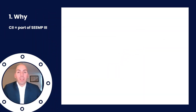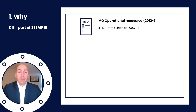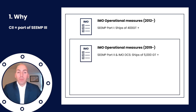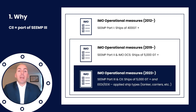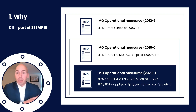CII itself is part of the Ship Energy Efficiency Management Plan number 3. We started with number 1 in 2012, number 2 in 2019, and the latest update from 2023 onwards includes the Carbon Intensity Indicator, amongst others. Under these regulations, ship owners are required to submit their CII yearly in order to get a rating, and each year the requirements become more stringent in line with IMO's decarbonization targets.